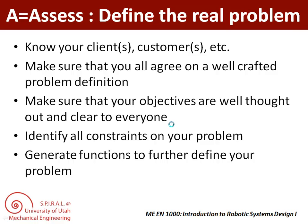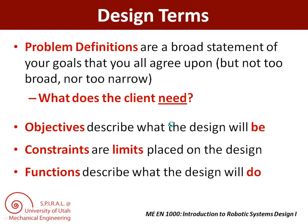How do we get a good problem definition? Well, you are already learning design terminology. Problem definitions are a broad statement of our goals that we all agree on. The trick is to be neither too broad nor too narrow. We don't want to overly limit our design solutions, but we also have to make sure we are being specific about what exactly the client needs. Objectives describe what the design will be, constraints are limits placed on the design, and functions describe what the design will do.